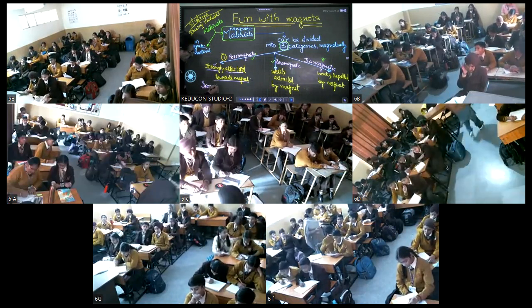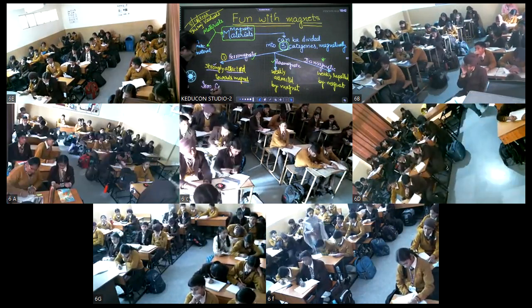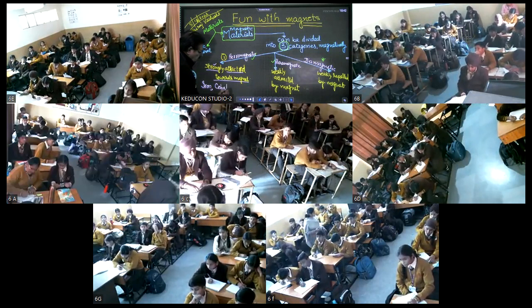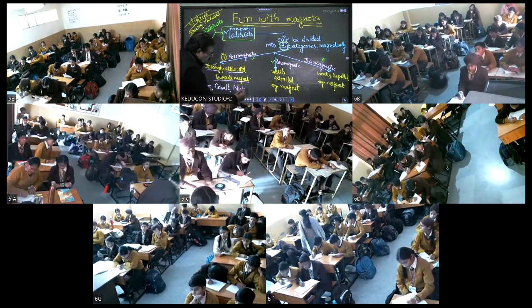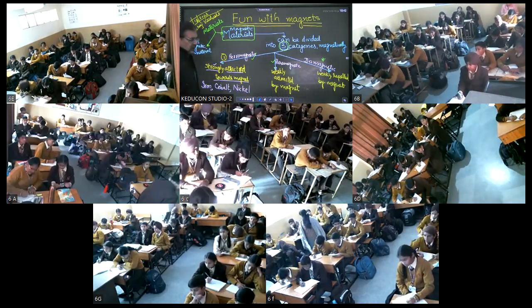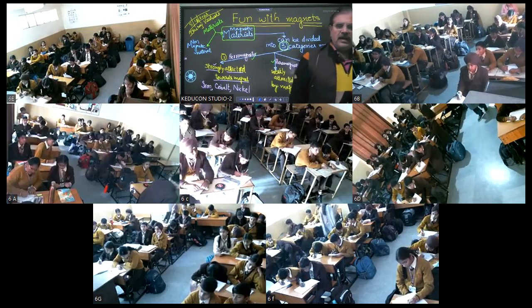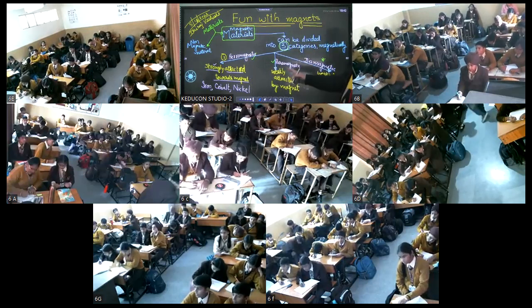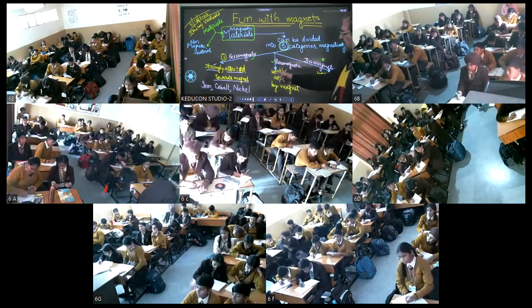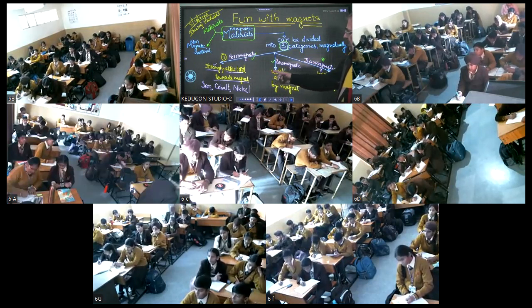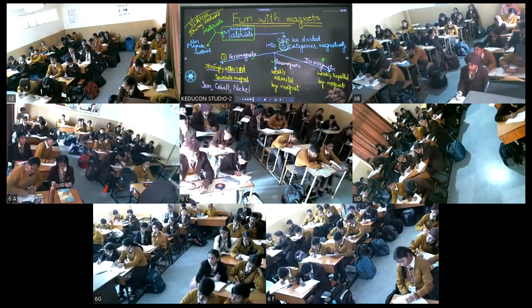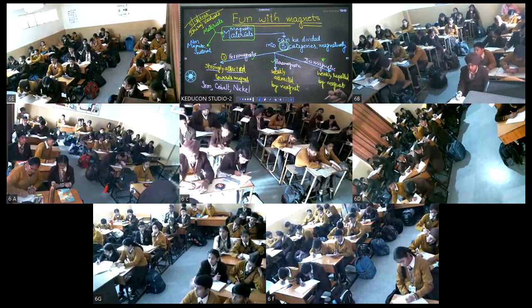उनके नाम याद रखना: iron, cobalt, और nickel। ये तीनों metals हैं — अलग-अलग metals — iron, cobalt, और nickel। ये तीन materials nature में exist करते हैं और चुम्बक की तरफ बहुत जोर से खिंच जाते हैं।